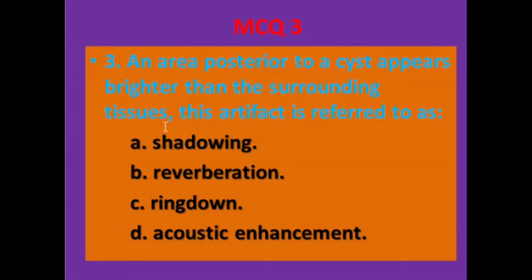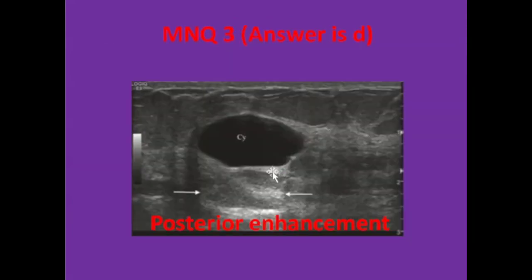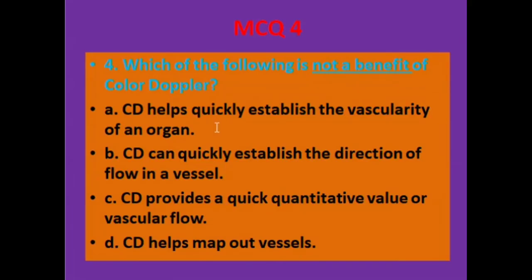MCQ number three: an area posterior to a cyst appears brighter than the surrounding tissues. This artifact is referred to as — A: shadowing, B: reverberation, C: ring-down, D: posterior acoustic enhancement. The answer is D. This is the cyst, and this is the posterior enhancement.